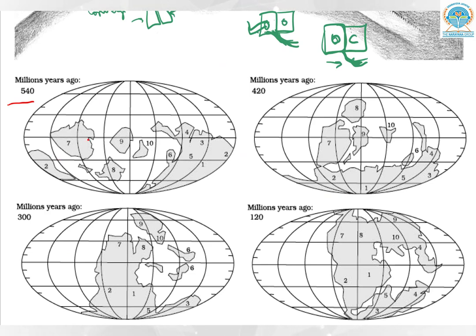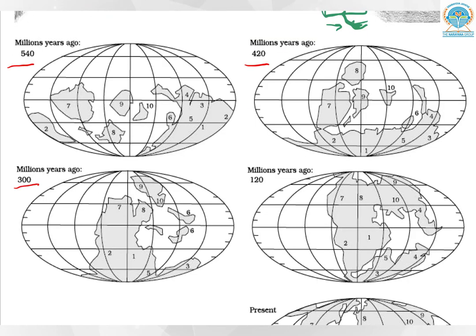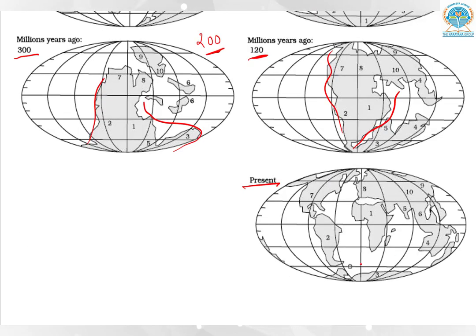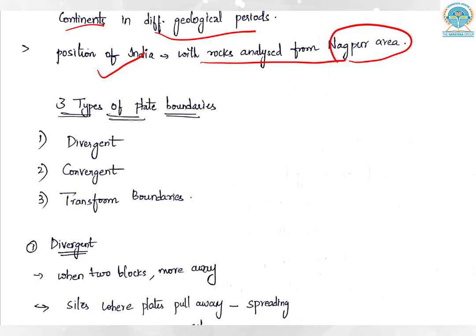Around 550 million years ago the plate composition on Earth's surface was differentiated in various ways. Around 420 million years ago the plates started coming together, and around 300 million years ago they were trying to form a single landmass. By 200 million years ago Pangaea formed as a single landmass and started drifting. Around 120 million years ago Pangaea began disintegrating again, leading to the present distribution of oceans and continents.